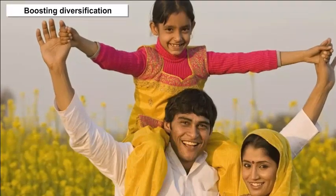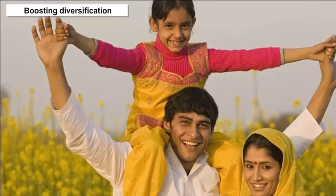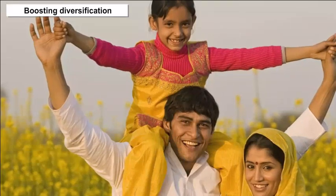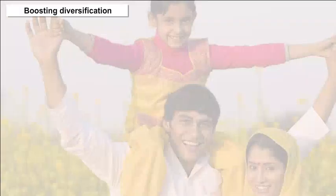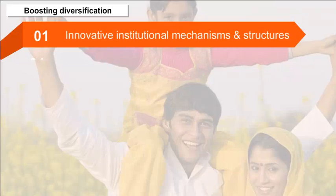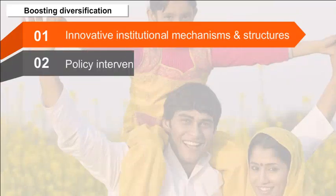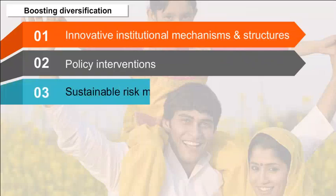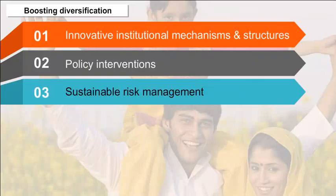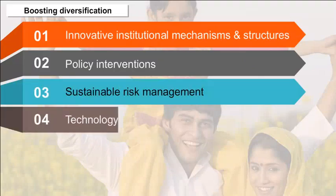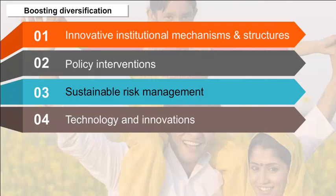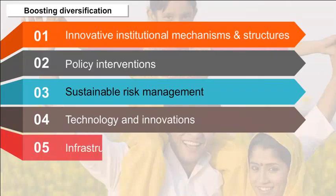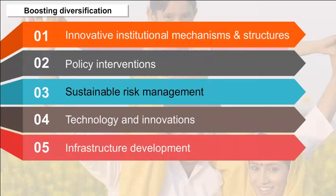To further augment rural income, we need to move up the curve through some key focus areas of intervention: 1. Innovative institutional mechanisms and structures, 2. Policy interventions, 3. Sustainable risk management, 4. Technology and innovations, 5. Infrastructure development, 6. Skill development.